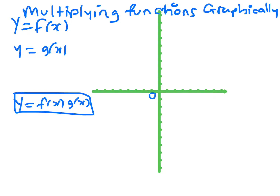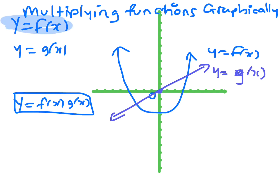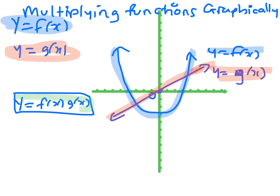This is about multiplying functions. We're going to draw the function y equals f of x — that's the given function — and y equals g of x, making it look like that. So f of x is this one and g of x is this one. Now what we want to do is look at what the resulting curve would be if we multiplied these two functions.